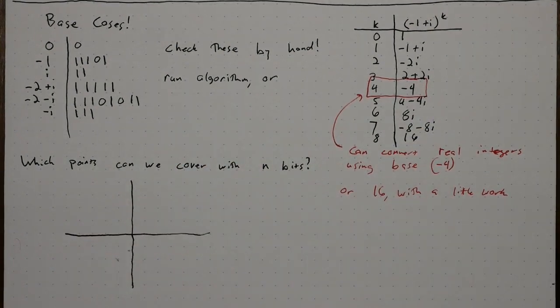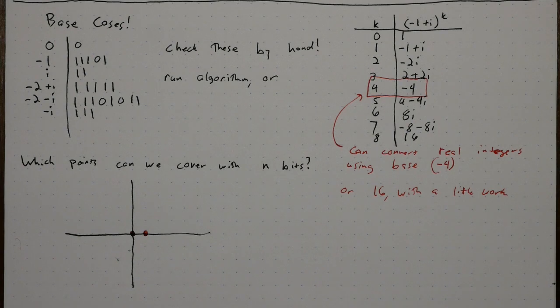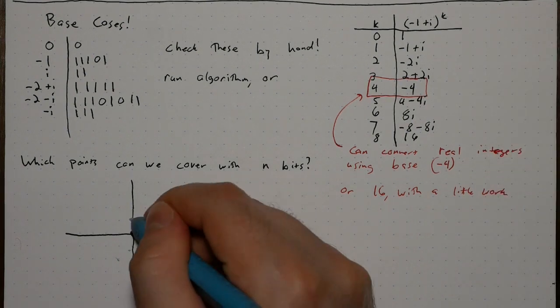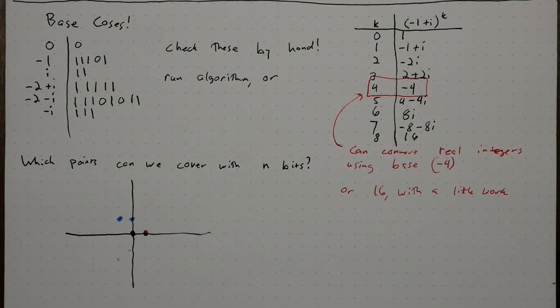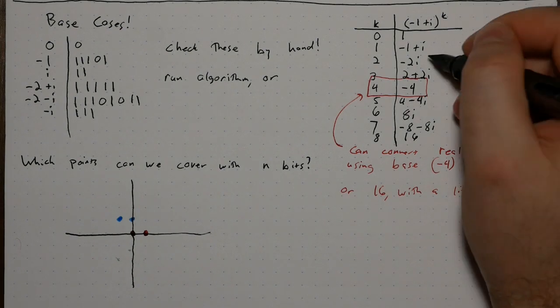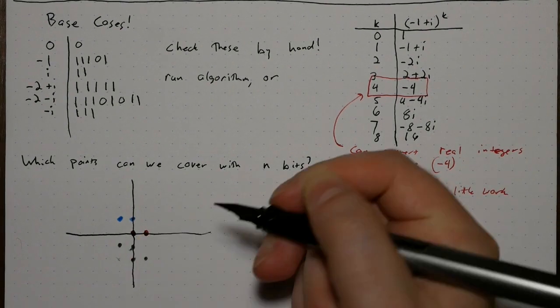One bit can represent 0 and 1. Adding another bit means we get those points, and those points plus negative 1 plus i. A third bit gets those points, and all of those points minus 2 plus 2i, because negative 1 plus i squared is negative 2i.